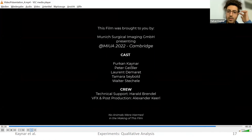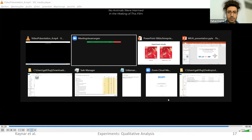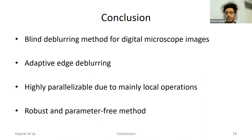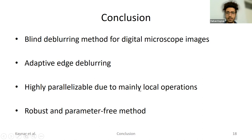I'm almost at the end with a single slide for conclusion. We proposed a blind de-blurring method for digital microscope images to overcome diffraction limits and improve image quality. We have adaptive edge de-blurring — we adaptively de-blur edges spatially by locally estimating the PSF and locally deconvolving. It is highly parallelizable due to mainly local operations. It is a robust and parameter-free method in the sense that when a surgeon uses this method, they don't have to tune the parameters — the method adapts to the image and operates automatically. Thank you for your attention, and I'd be happy to take questions.